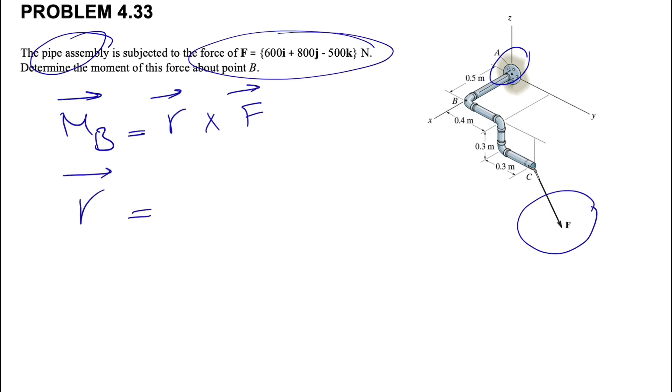And what we need to do is find the position vector first. And as we covered in the previous question, the line that connects the point that we are finding the moment about, which in this question is point B, to the line of action of the force.